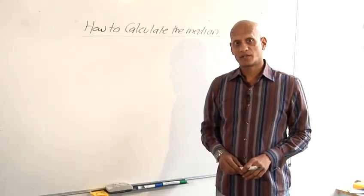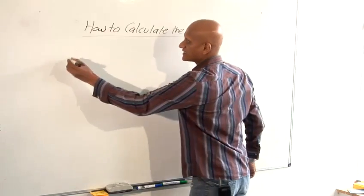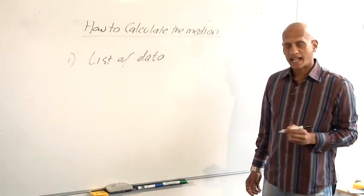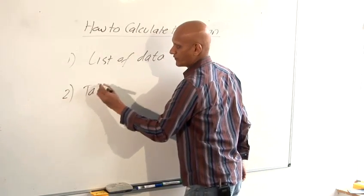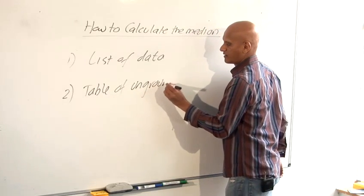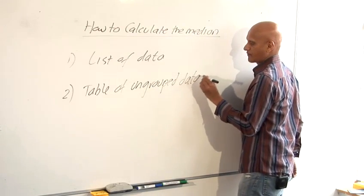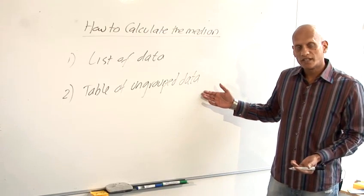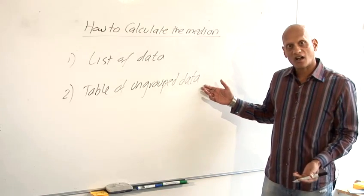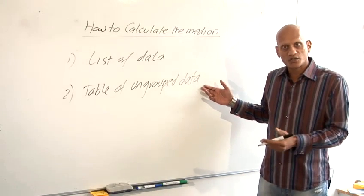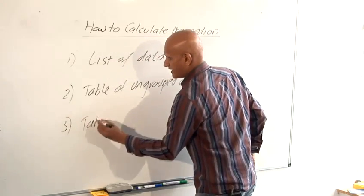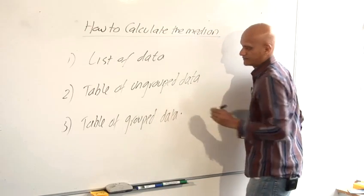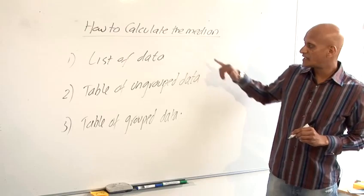Now there are three different cases in which we'd need to calculate the median. The first case is if we have a list of data. The second case is if we have a table of ungrouped data. So that would probably be discrete data, something like the number of times you went to the cinema or number of seats in a car, things which can't be 3.12 or something like that. And then three, a table of grouped data. The method we'd use would be different for each of these.